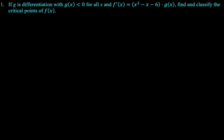Number one: If g is differentiable with g(x) < 0 for all x and f'(x) = (x² - x - 6) · g(x), find and classify the critical points of f(x). This is kind of neat because it's a little bit of a twist on a normal problem. Normally you're just given the function and you have to do the work. Here we have something times g(x), that's interesting. Also, we have the derivative to begin with. So I'm gonna factor x² - x - 6 because we need to know the zeros of the derivative, because those are the critical points.